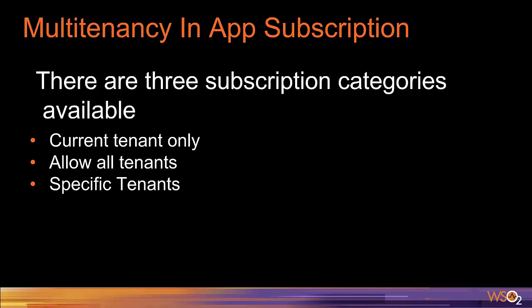The subscription availability feature introduces three kinds of options for a web app. The first is current tenant only — if selected, only users of the tenant where the application is created can subscribe and access it. The second option is allow all tenants, where users from all tenants can access the app. The third is specific tenants, where users of specified tenants and the current tenant can subscribe and access the app. We can understand this in detail through the demo.